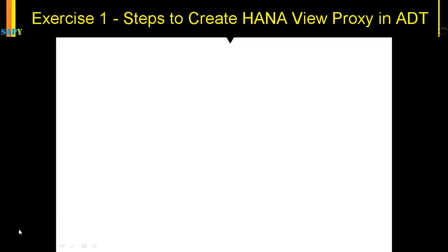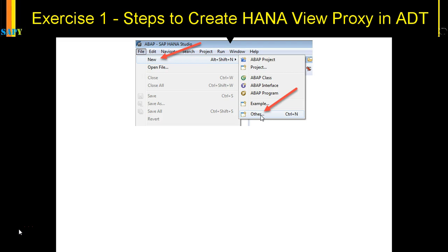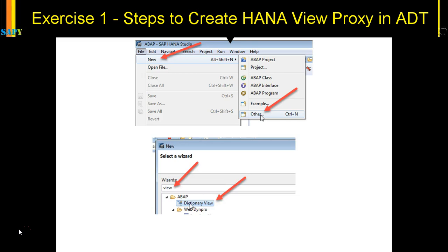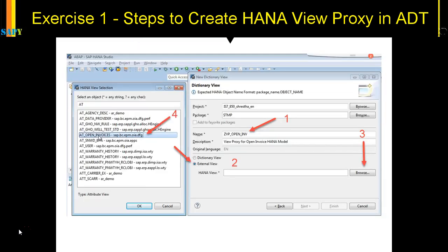Let us perform our first exercise for this training course. Let us create a view proxy in ADT. We'll go to the ABAP perspective, then click New > Others, then type in 'view' and go to the Dictionary View.